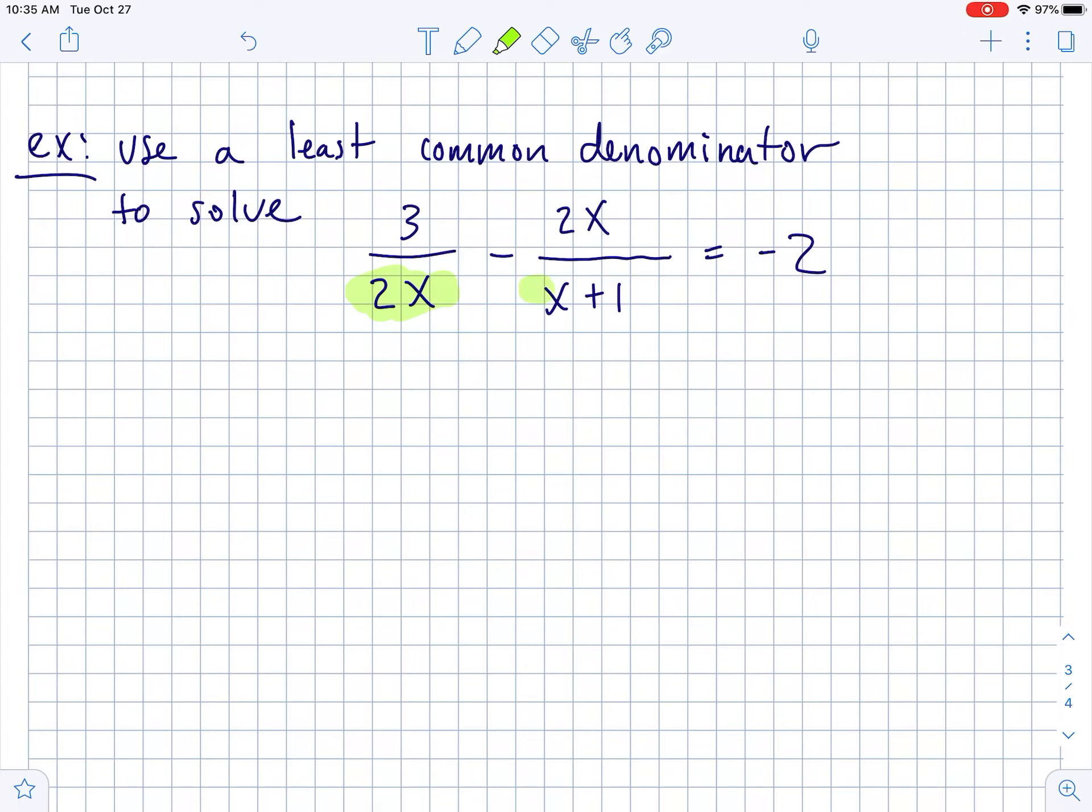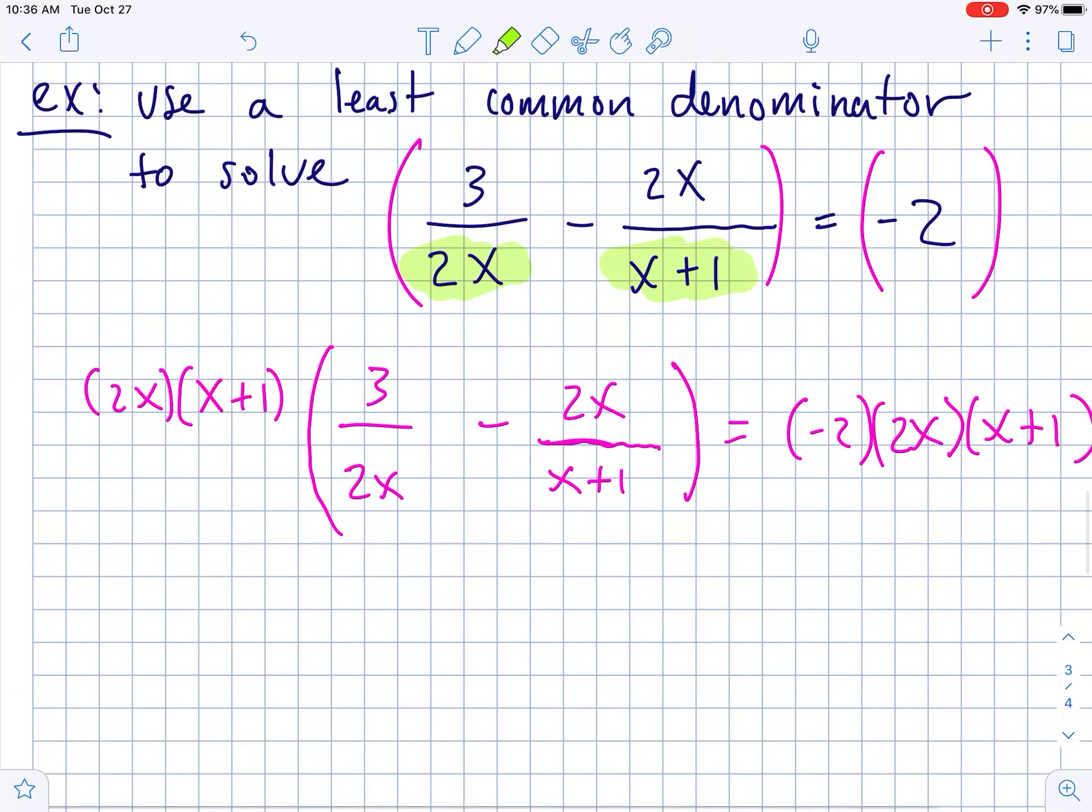Next up, use a least common denominator to solve this equation. Please notice the denominators of 2x and x plus 1. That means the least common denominator would be those two things multiplied together. So, what we're going to do is take both sides and multiply them by the least common denominator. So, the least common denominator is going to be 2x times x plus 1. And then, this will get multiplied with 3 over 2x, take away 2x over x plus 1, and this is equal to negative 2, but still times the least common denominator. So, you blast both sides with the least common denominator.